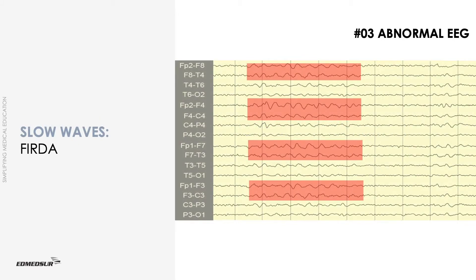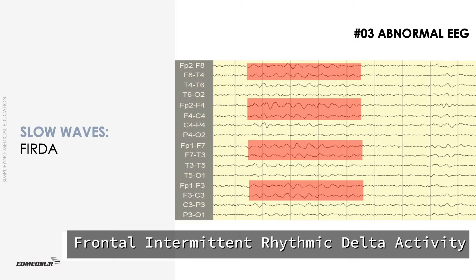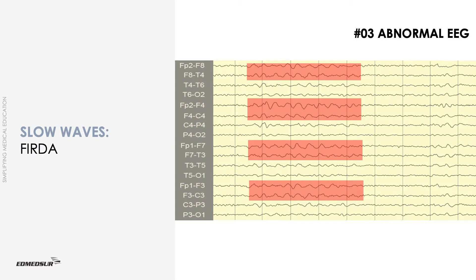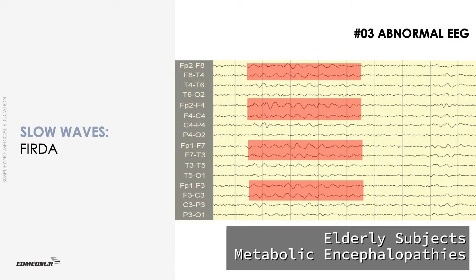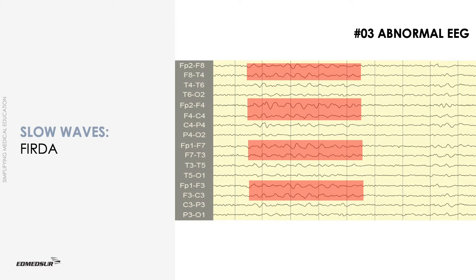Sometimes discrete trains of rhythmical delta waves — that is, intermittent rhythmical delta activity — may occur maximally in the frontal or occipital areas. This is frontal intermittent rhythmic delta activity. It may be a normal finding in elderly subjects, or can be seen with metabolic encephalopathies. Similarly, occipital intermittent rhythmic delta activity is mostly seen in children. When present, the possibility of absence seizures should be considered, although they can be seen in normal children as well.